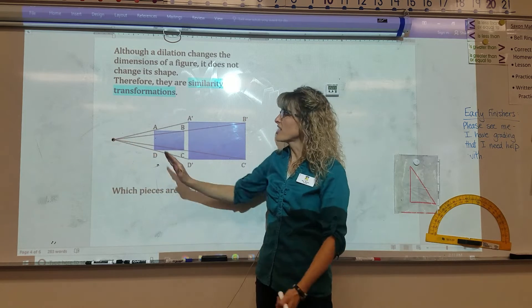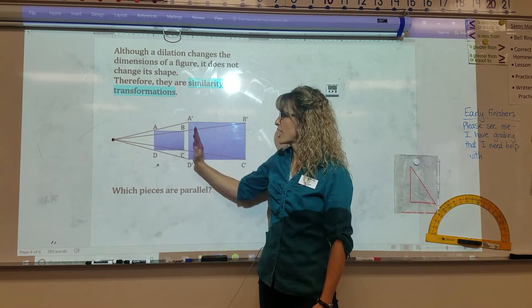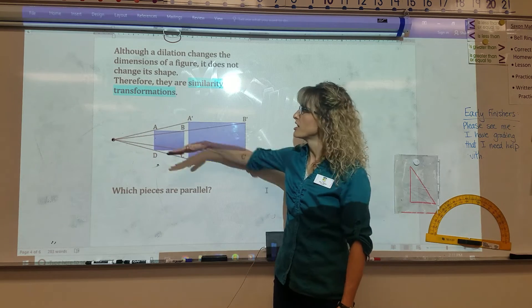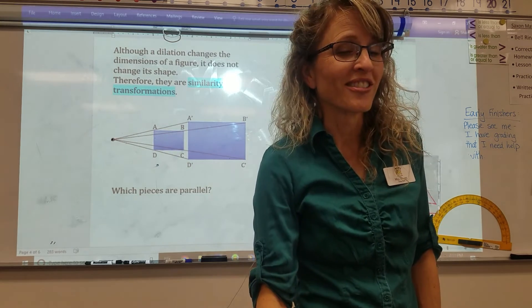If you have a rectangle that undergoes a dilation, it gets bigger, everything is proportional still. And if you were to connect points, you would have a center of dilation. What it does, though, is it creates proportionate sides and it creates parallel lines. So AB is parallel to A prime B prime. This is parallel, parallel, parallel, parallel, parallel, parallel. And they are similar.